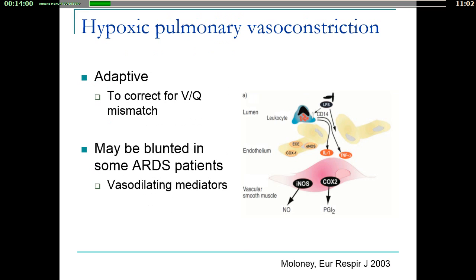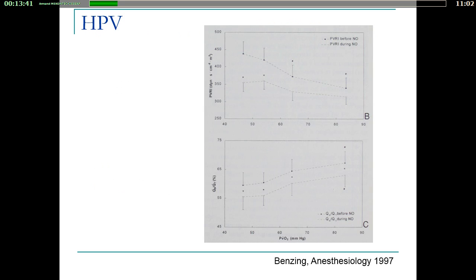Concerning vasoconstriction, the first phenomenon is hypoxic vasoconstriction, which is adaptive to correct for the ventilation-perfusion mismatch. Some authors say that it could be blunted during ARDS, but there are arguments to think there is a degree of hypoxic pulmonary vasoconstriction. In a study of patients on ECMO, when you increase the partial pressure of oxygen in the pulmonary artery, you see a decrease in pulmonary vascular resistances, alleviating vasoconstriction, and the shunt increases in parallel.